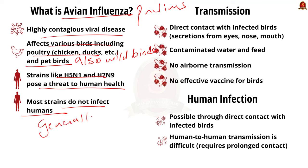Avian influenza spreads through direct contact between infected and healthy birds, through secretions from nostrils, mouth, and eyes. Therefore, it is not airborne — please note this. It can also spread through contaminated water and feed. There is no effective vaccine against bird flu. It is possible for humans to contract avian influenza viruses from birds, but human-to-human transmission is much more difficult without prolonged contact.